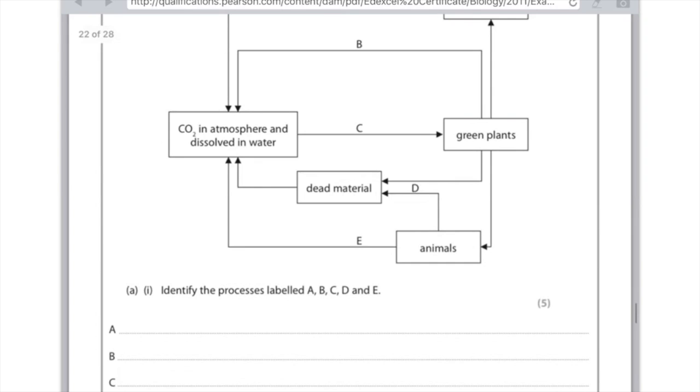And then D, where's that going? It's from animals to dead material. All that they're doing there is rotting. So you can write rotting or decay or decomposition or death. Any of those words is absolutely fine.